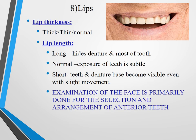Lips are also really important: lip thickness (thick or normal), and lip length (long, normal, or short). Lip length is important because it affects how much of the teeth is shown. Short lips expose teeth even with slight movement. These things need to be checked during the try-in stage and jaw relation stage — examining the smile line and buccal exposure in the maxillary denture.